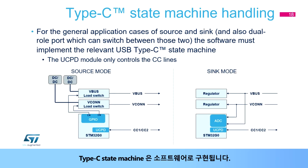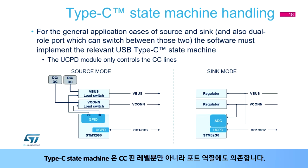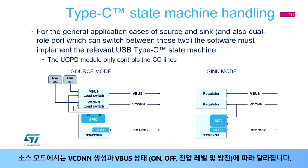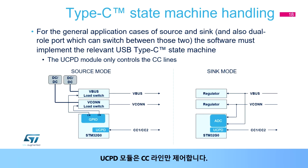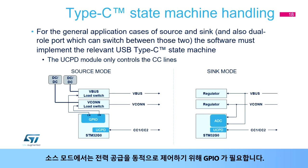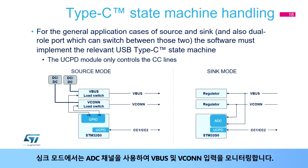The Type-C state machine is implemented in software. It depends not only on CC pin levels but also on the port role. In sink mode, it depends on VBUS presence detection. In source mode, it depends on VBUS generation and the VBUS state — on, off, voltage level, and discharge. The UCPD module only controls the CC lines; other modules are involved to control VBUS and VBUS power supplies. In source mode, GPIOs are required to control power delivery dynamically. In sink mode, ADC channels are used to monitor VBUS and VECON supplies.